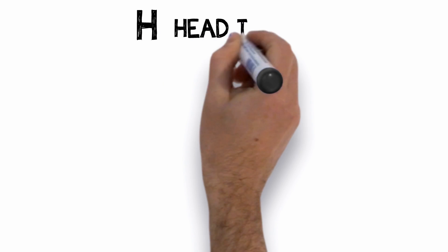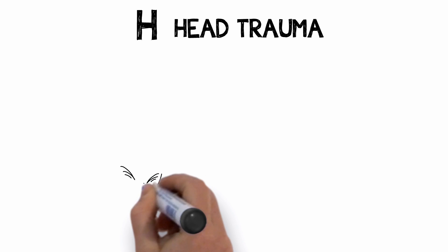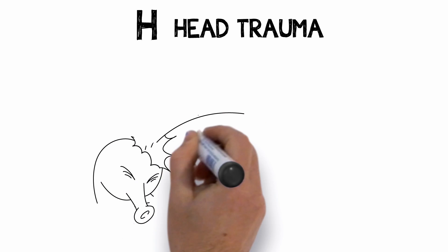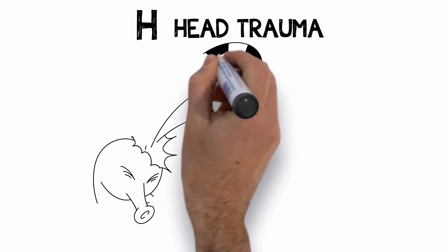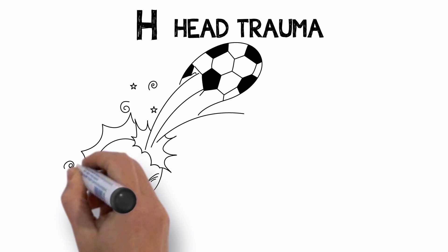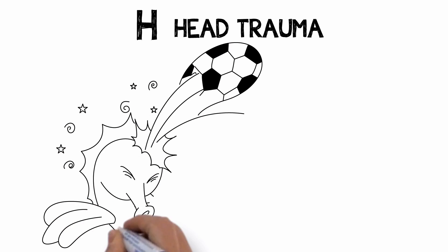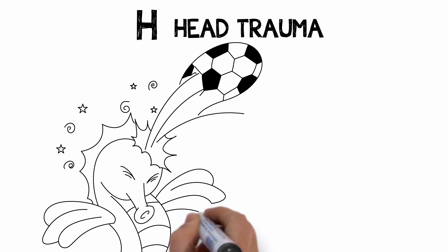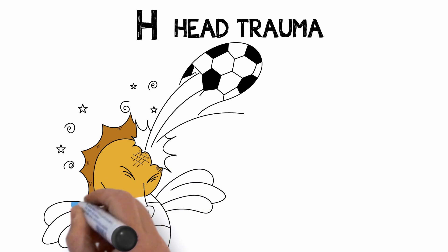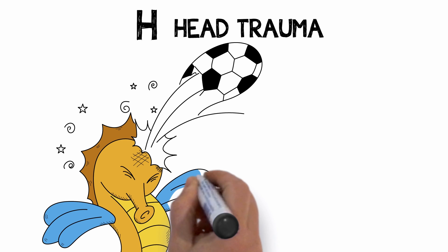H is for head trauma. Your brain is soft, about the consistency of soft butter, and your skull is really hard with sharp bony ridges. Sam loves soccer. He played as a young seahorse and was even playing on weekends. He was particularly good at heading soccer balls, even though sometimes it left him feeling dazed.